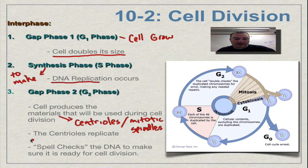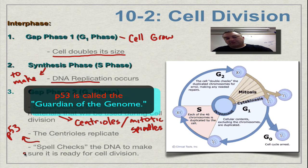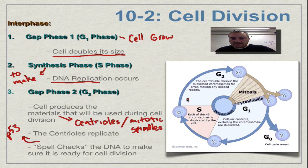So your centrioles are replicated and you're going to spell check it. And that's going to be done by a protein called the p53. And this is going to make sure that no genetic mistakes are passed on to the next generation. We're going to come back to p53 because it has a key job in preventing cancer. And we'll see how mutations can cause that to be a problem.